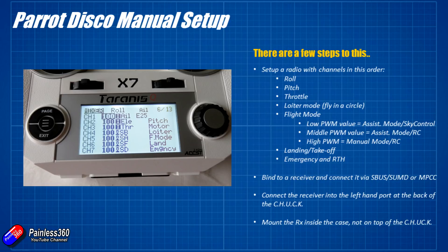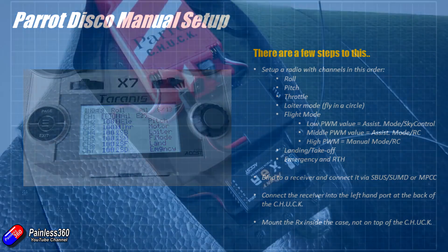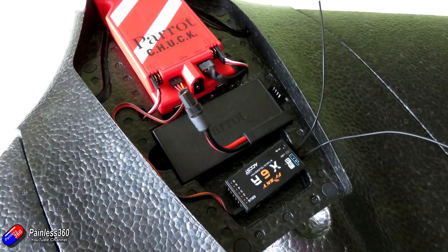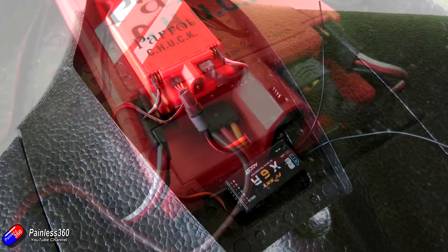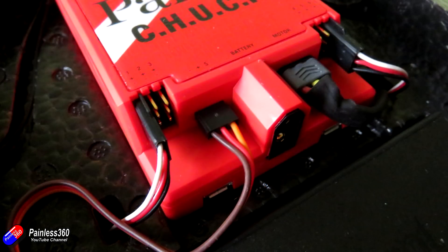Next you need to bind the receiver. I bound it with D16 protocol, only sending the eight channels I've got set up — there's no point binding for 16 channels when the other eight aren't sending any data. Then you plug the receiver into the port at the back of the Chuck flight controller in the middle of the Parrot Disco. Watch the polarity — make sure the signal wire is towards the center. It's actually marked on mine, which is helpful. It supports lots of different single-wire protocols, but I'm using SBUS and it works perfectly.